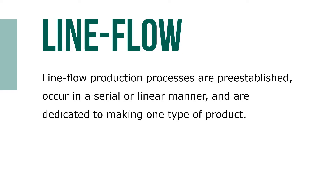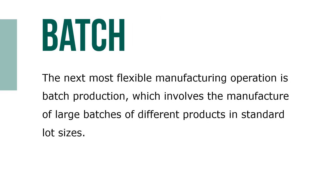In line flow production, production processes are pre-established, occur in a serial or linear manner, and are dedicated to making one type of product. The next and most flexible manufacturing operation is batch production, which involves the manufacture of large batches of different products in standardized lot sizes.